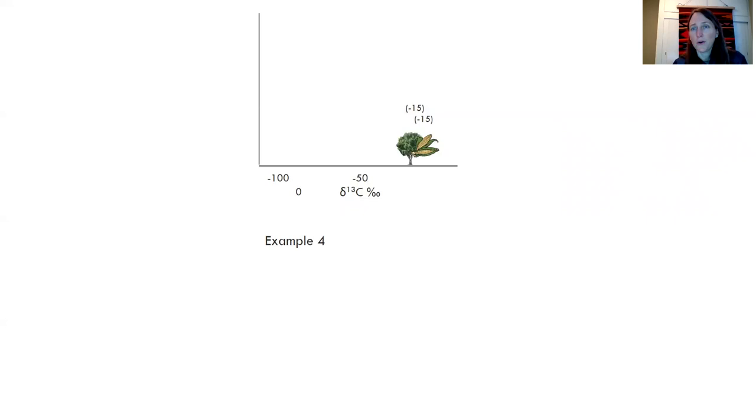If you were to compare a water-stressed tree to corn, it would be really hard to tell them apart. So because of the water stress, the tree is not able to discriminate as much as it normally would. And so a normal tree would be like down around negative 30, but if it's a water-stressed tree, it's going to look like a C4 plant.